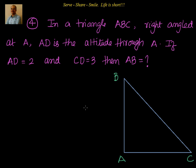Hello friends, welcome back. Let's look at this question: In a triangle ABC right-angled at A, AD is the altitude through vertex A. If AD equals 2 and CD equals 3, then AB is equal to how much?